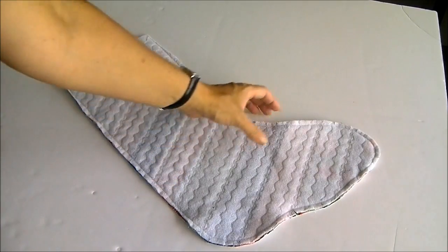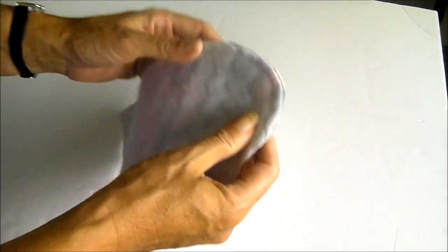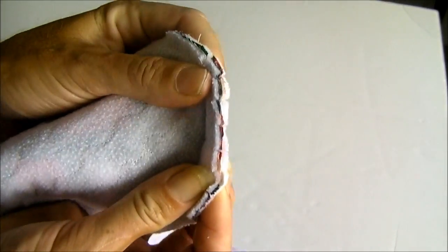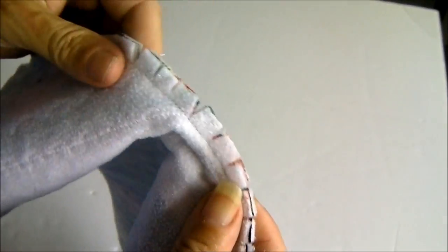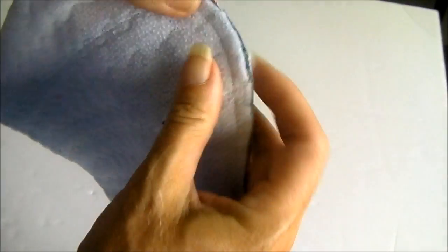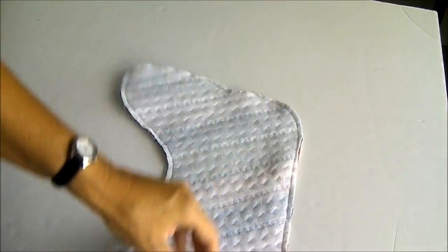So our stocking's now sewn and where we have the curved areas around here I've clipped into this seam allowance around all of these curved parts and this when we turn the stocking out it's going to help these curved seams sit a little flatter. So now we can turn our stocking the right way out and we'll take it back to the ironing board and give it a press and our next step will be to work on the lining.